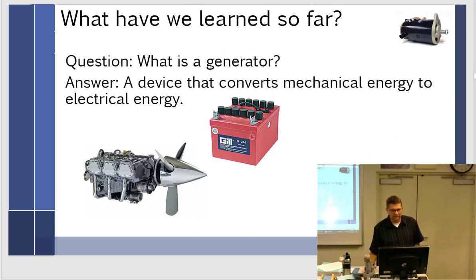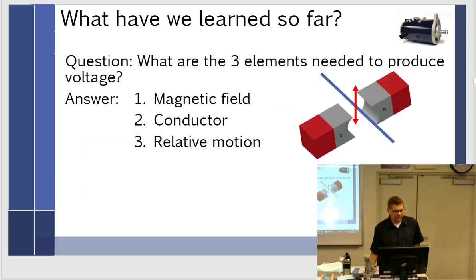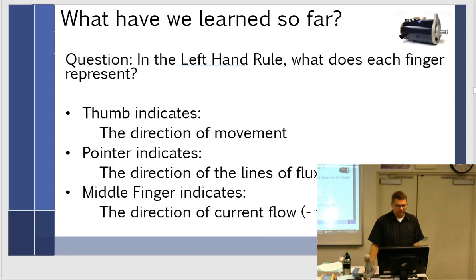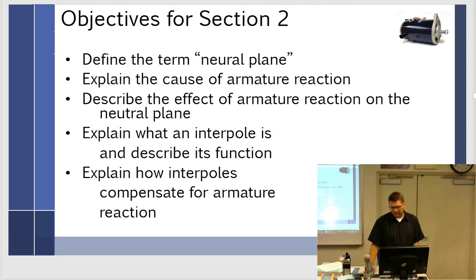What is a generator? Device that converts mechanical energy to electrical energy. Function of the commutator and brushes? Changes the voltage output of the generator from AC to DC. I won't make you memorize that. Objectives for section two: teach you some stuff. This is a good spot for a break.